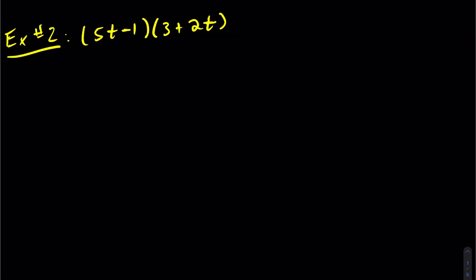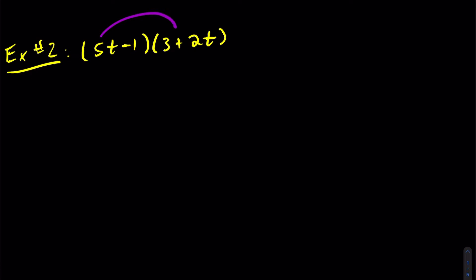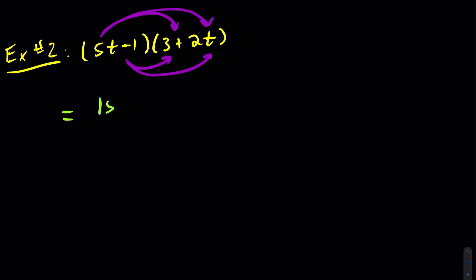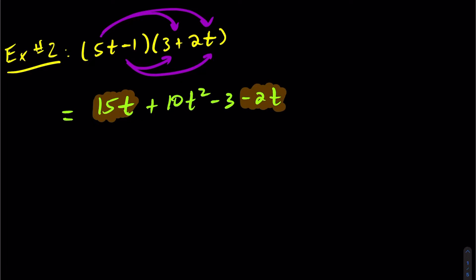Let's look at another example. If I want to solve this using FOIL, we distribute 5t to the first term, outside term, inside term, and last. So we have 5t times 3, which is 15t, then 5t times 2t — 5 times 2 is 10, t times t is t squared. Then the inside term gives negative 3, and negative 1 times 2t is negative 2t. Looking for like terms: 15t and minus 2t come together. Writing in order by degree: 10t squared plus 13t minus 3.